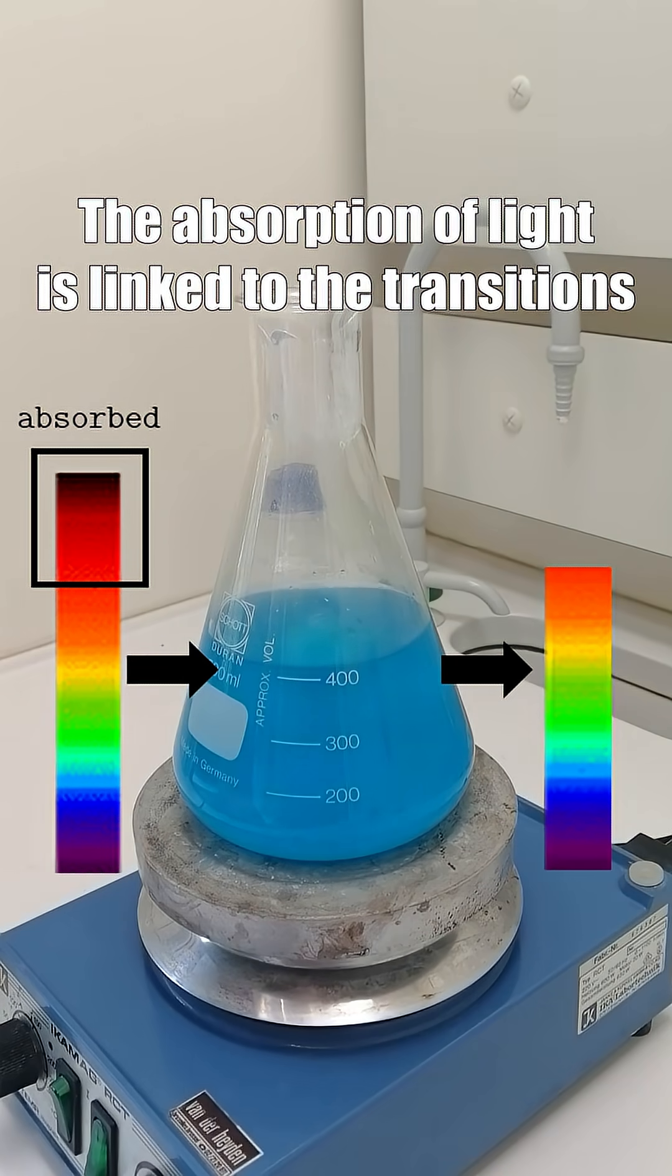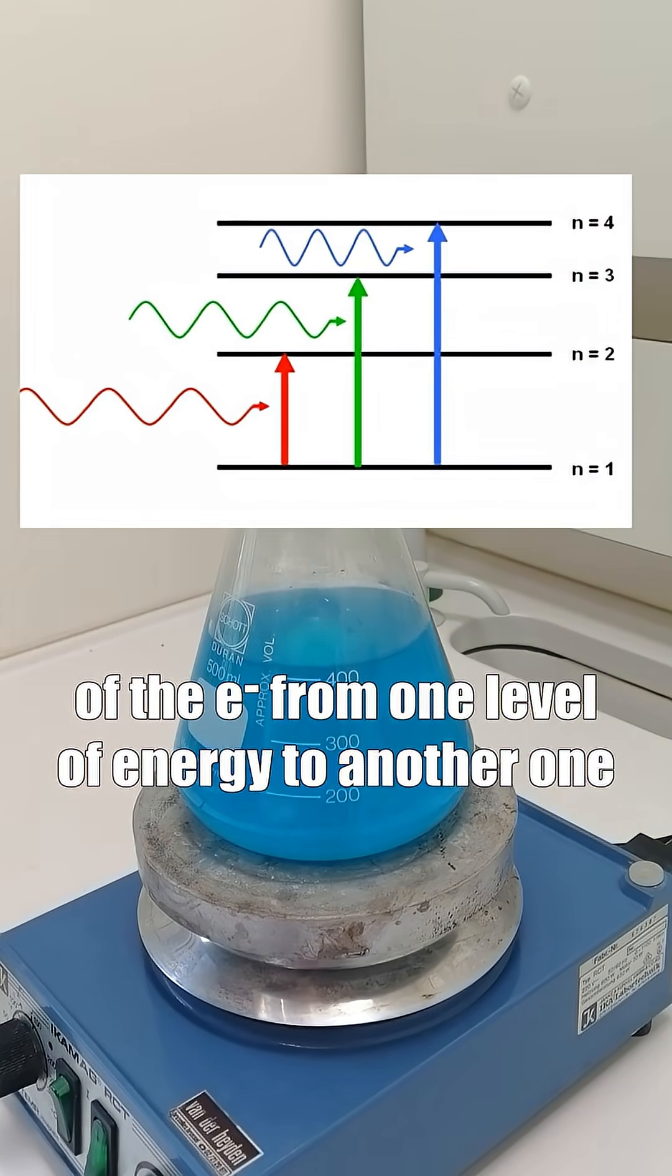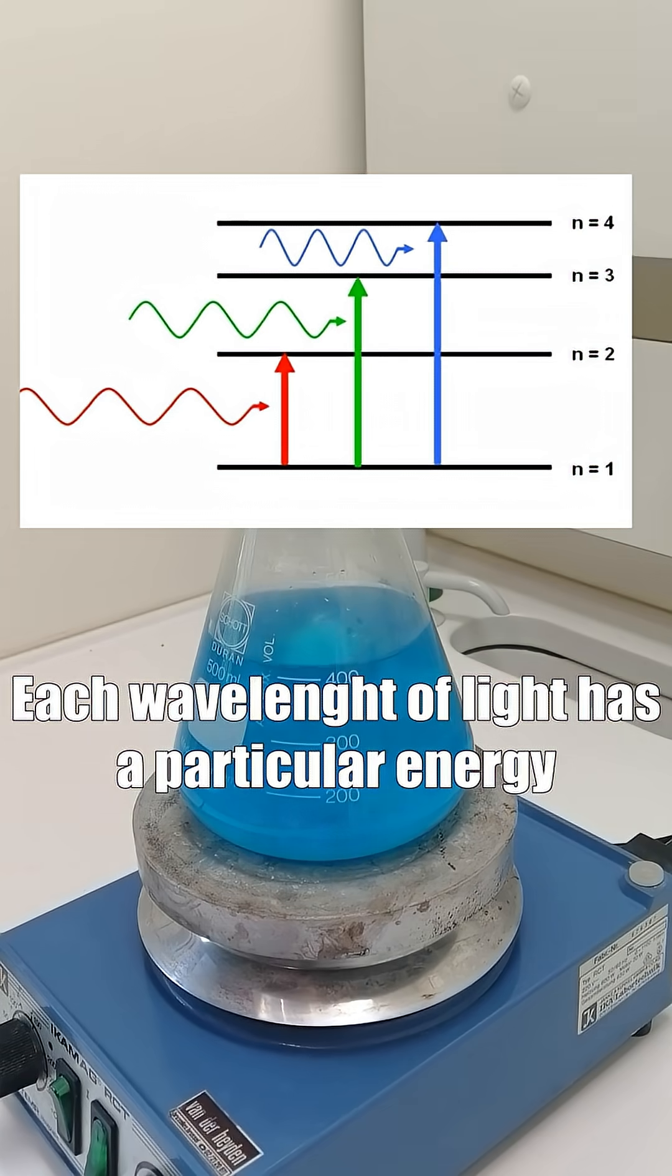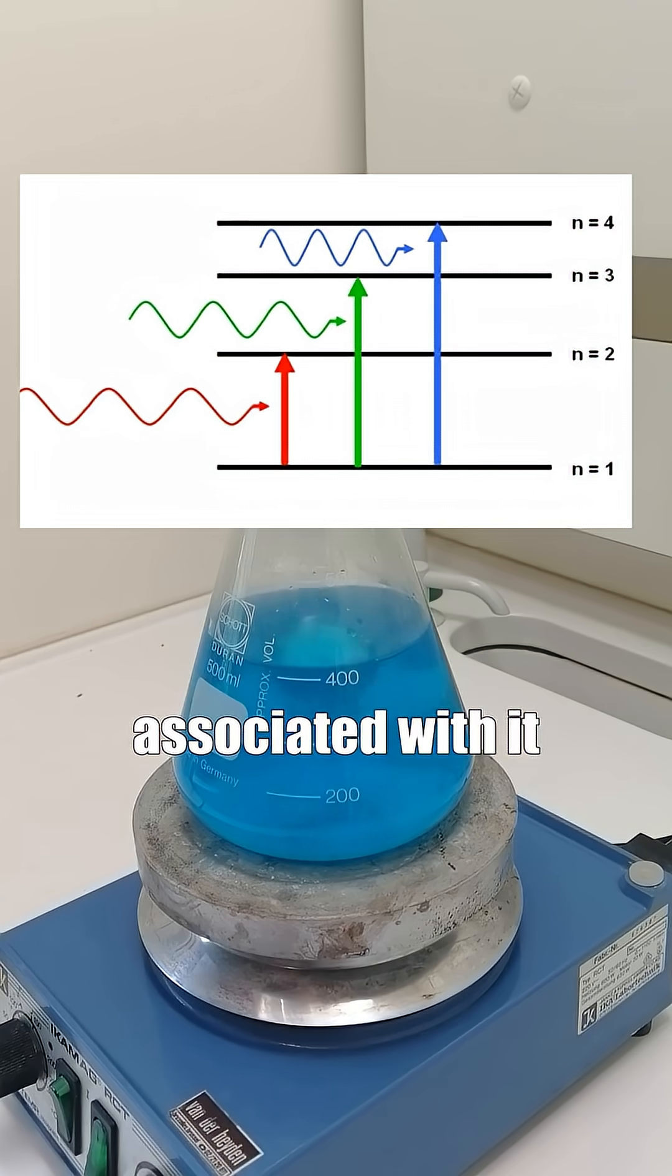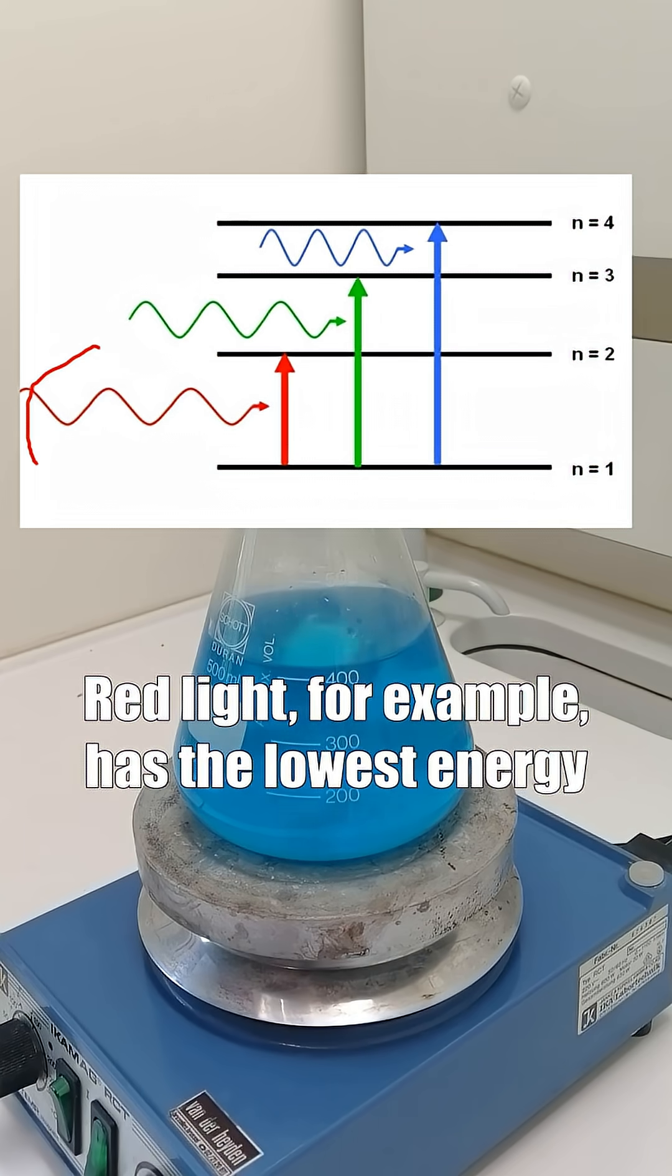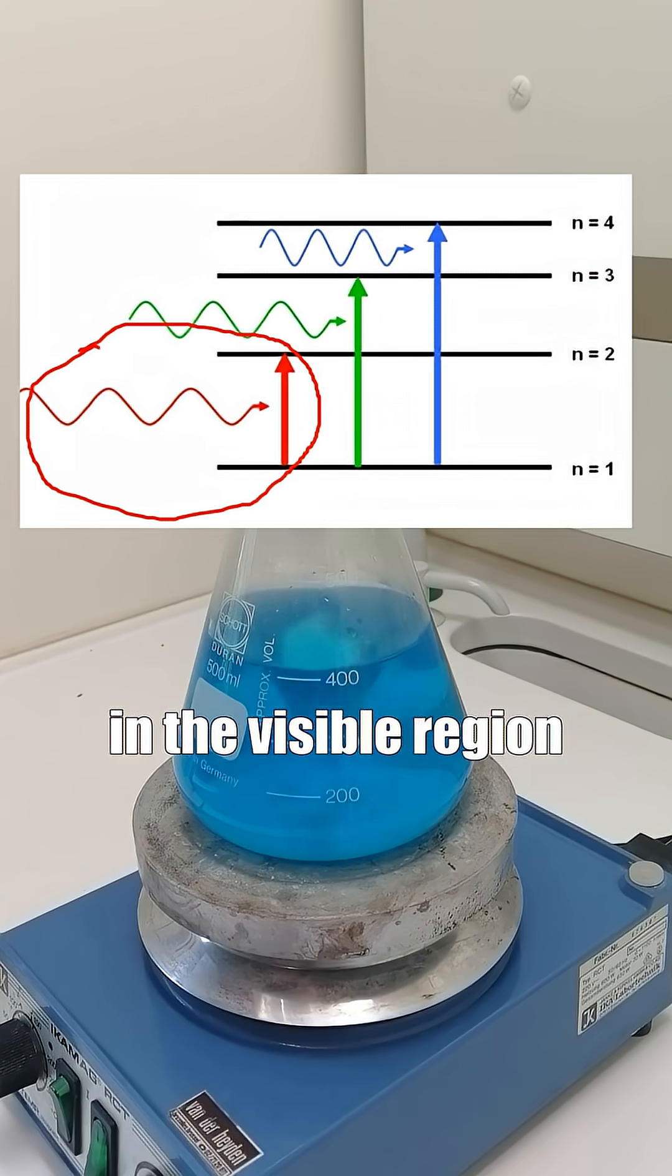The absorption of light is linked to the transition of electrons from one energy level to another. Each wavelength of light has a particular energy associated with it. Red light, for example, has the lowest energy in the visible region.